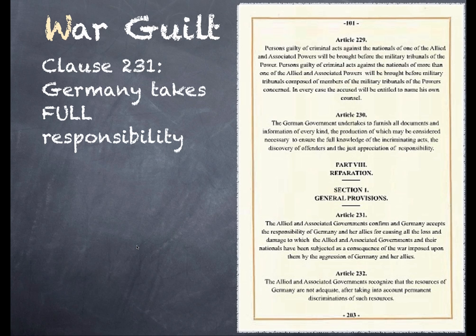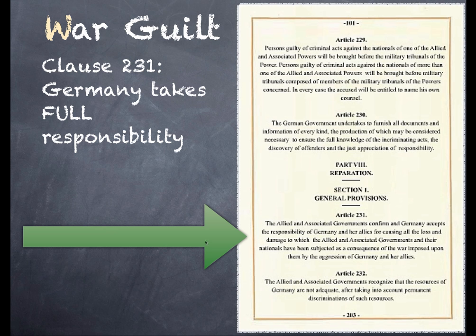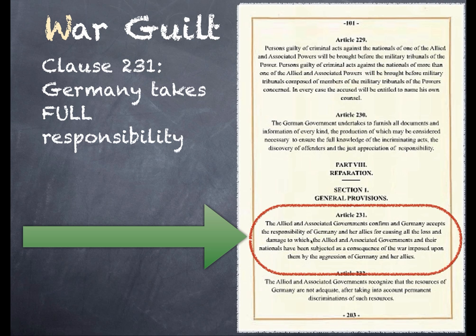Something the Germans really resent is Clause 231. In Clause 231, Germany is to take full responsibility for the war. Reading from the actual treaty: 'The Allied and Associated Governments confirm, and Germany accepts the responsibility of Germany and her allies for causing all the loss and damage to which the Allied and Associated Governments and their nationals have been subjected as a consequence of the war imposed upon them by the aggression of Germany and her allies.' So Germany is fully blamed for the war.